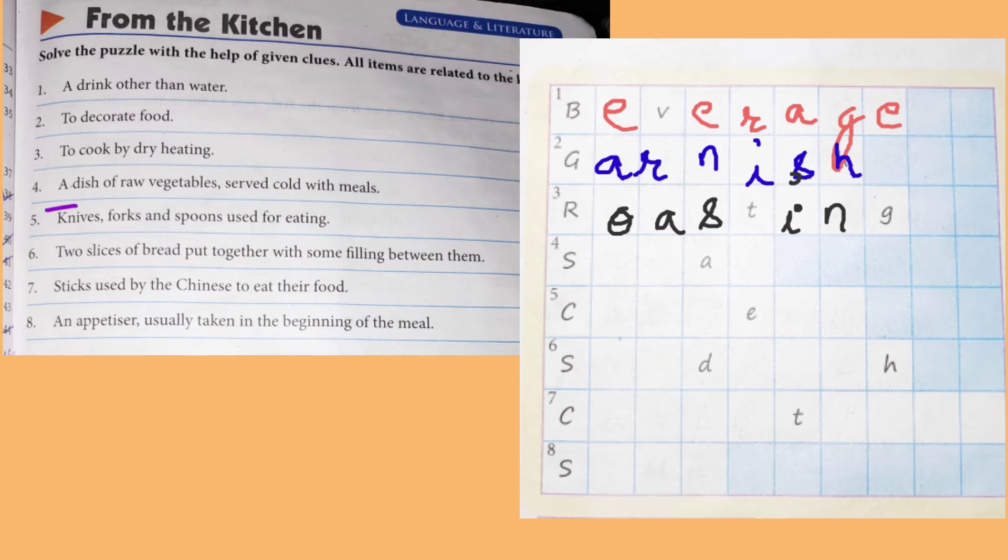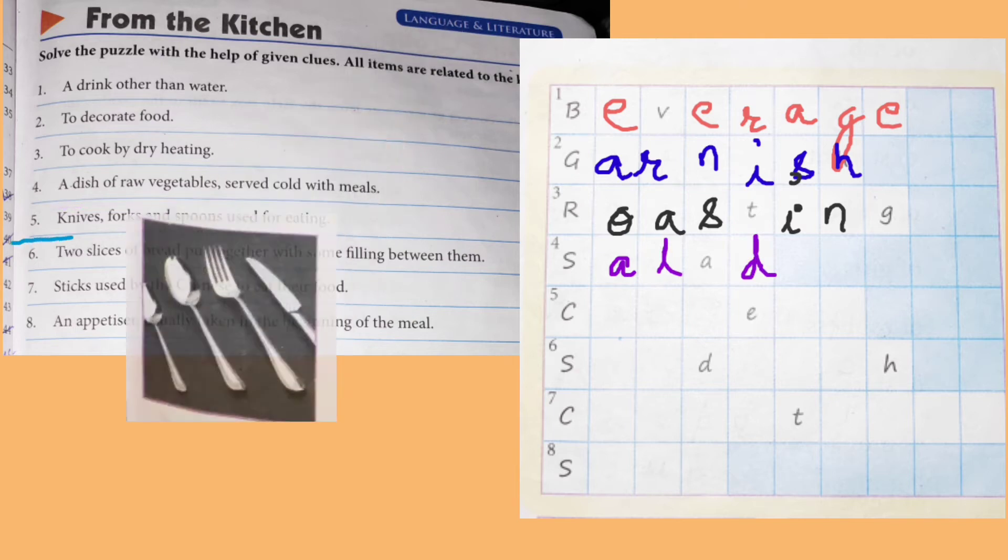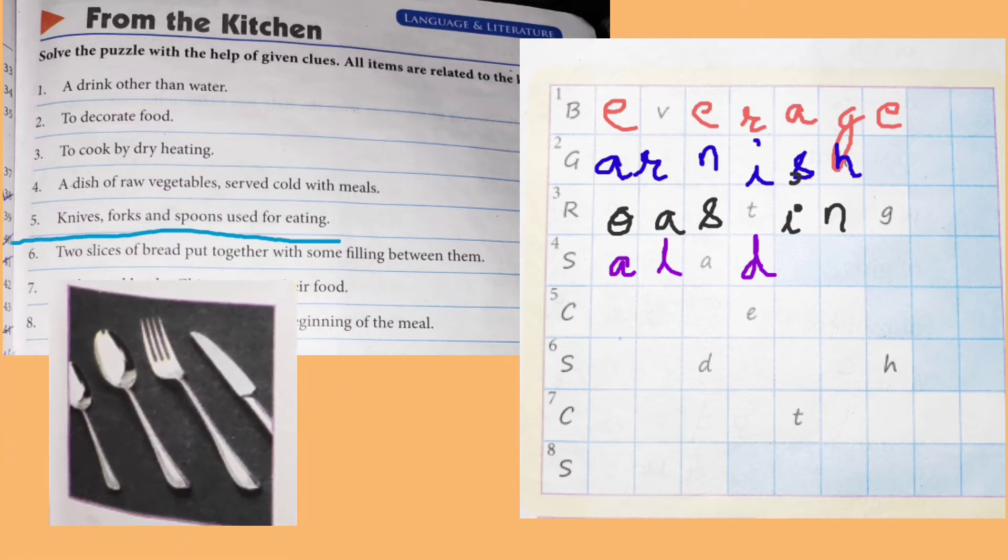Next, a dish of raw vegetables served cold with meals. A dish of raw vegetables which we're going to eat with eating. So we know what we call salad. Salad, S-A-L-A-D salad. Next, number five, knives, forks and spoons used for eating. Knives, spoons, forks. We call them cutlery. C-U-T-L-E-R-Y. Cutlery.